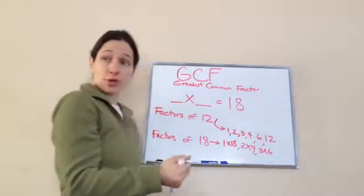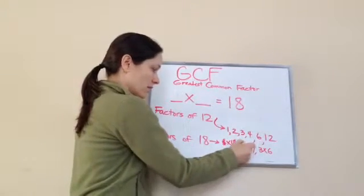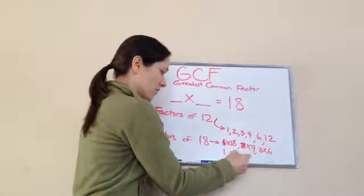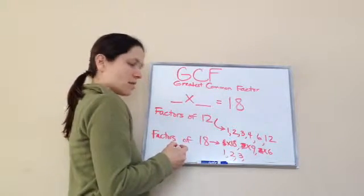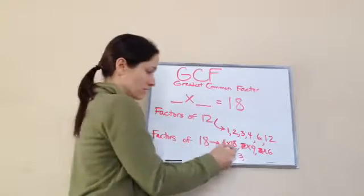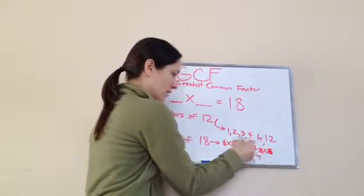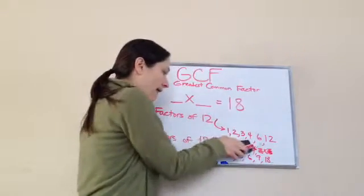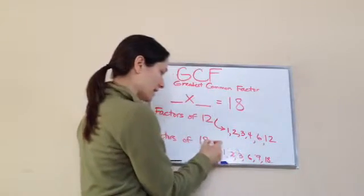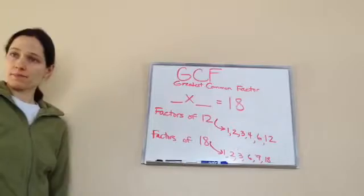So these are my numbers. Let's go in and put them in order. 1, 2, 3. What number's next? 6, 9, 18. These are my factors of 18. Right? Yeah.